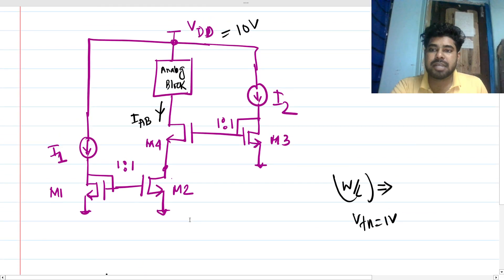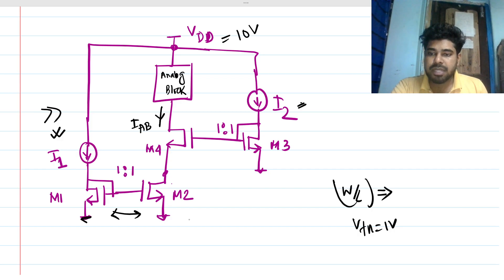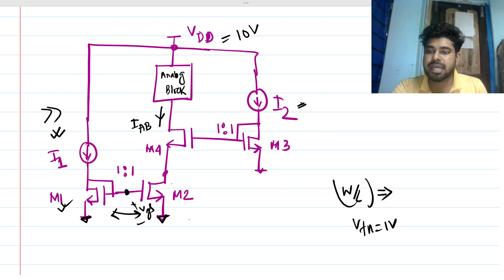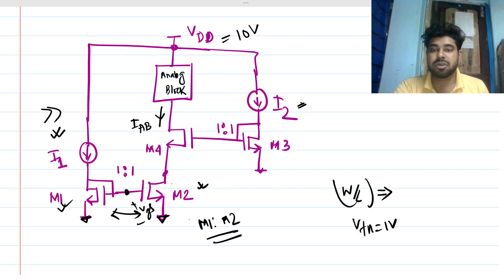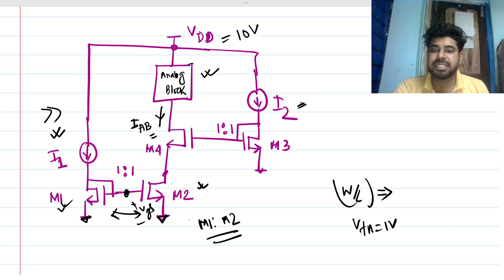So if I1 is much greater than I2, this current is much larger than that current. Now we can see that M1 and M2 are in a current mirror, because both sources are connected to ground and gates are connected together — so both have the same VGS. M1 and M2 are always in a current mirror when both are in saturation. This is the analog block, and we want to find what current IAB flows through it.